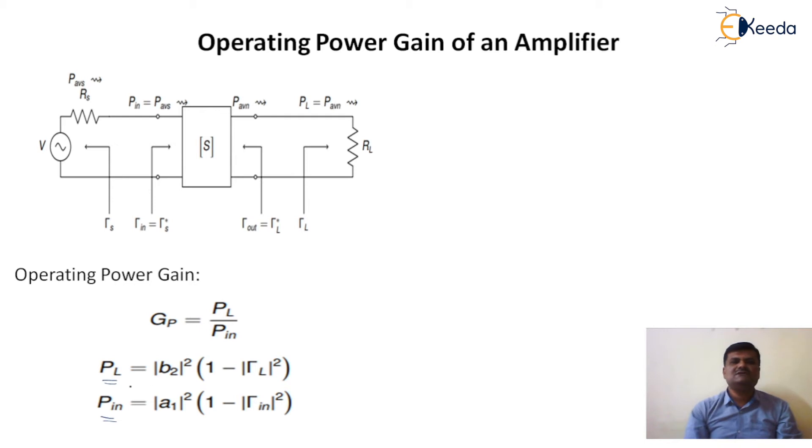Put these two into the equation of operating power gain. Then Gp becomes Gp equal to mod b2 squared into bracket 1 minus mod gamma L squared divided by mod a1 squared into bracket 1 minus mod gamma in squared. Now we will calculate b2 by a1.